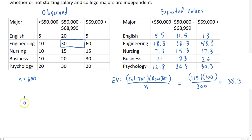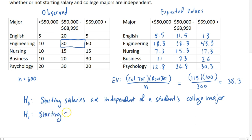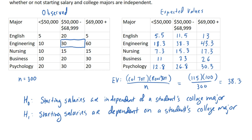So when we do the test for independence, your null hypothesis is always going to be that the two variables are independent. So our null hypothesis would be that starting salaries are independent of a person's college major. Your alternate hypothesis for a test for independence is that, in this case, starting salaries are dependent on what a student majored in in college. So when you do a test for independence, this is the way your hypotheses work. And now we're going to go ahead and bring up the calculator and see what we get.